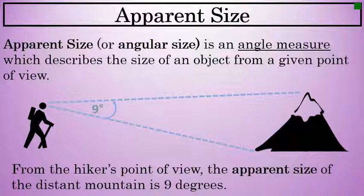Unlike other units of size like meters, feet, kilometers, or miles, apparent size is not measuring the actual height of the mountain. It's not actually a measure of how tall that mountain is. Apparent size is an angle measure, and that angle changes depending on the observer's distance from the object.